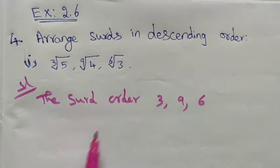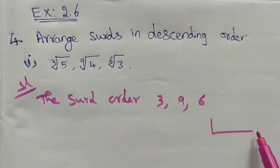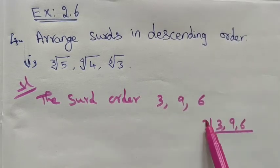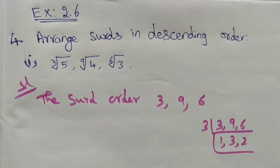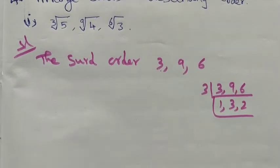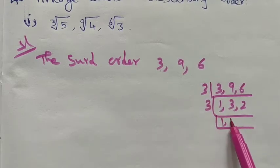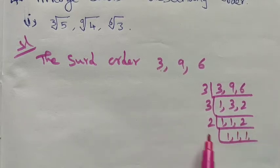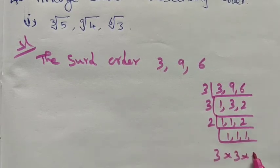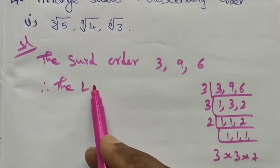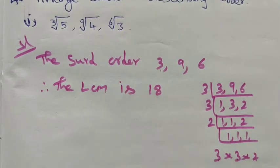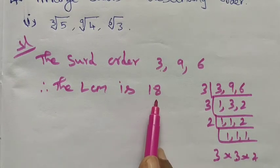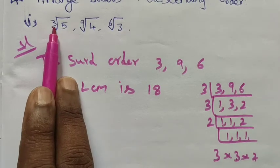Now we want to take the LCM for 3, 9, and 6. Divide by 3: we get 1, 3, 2. Divide by 3 again: we get 1, 1, 2. Divide by 2: we get 1, 1, 1. So 3 × 3 × 2 = 18. Therefore the LCM is 18. We have found that, and now we have to convert all the powers to the same format: 18th root.